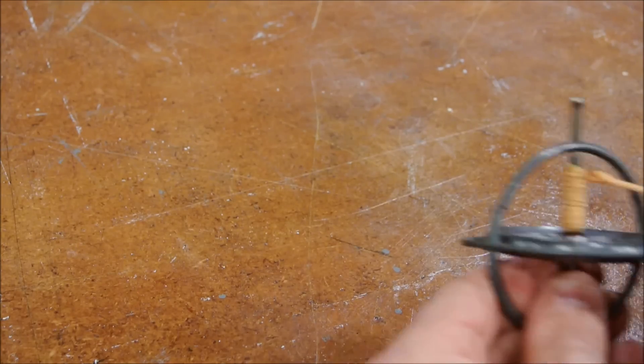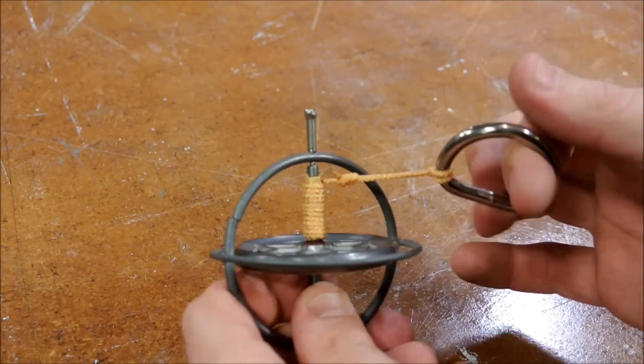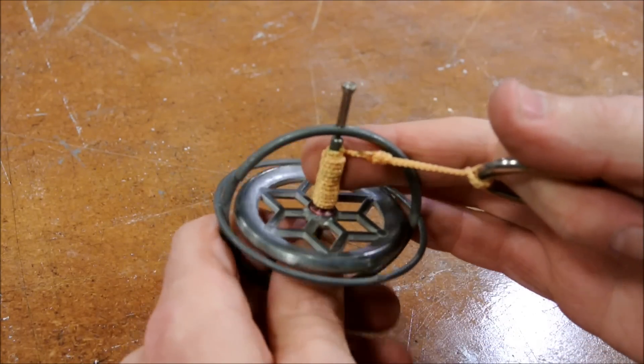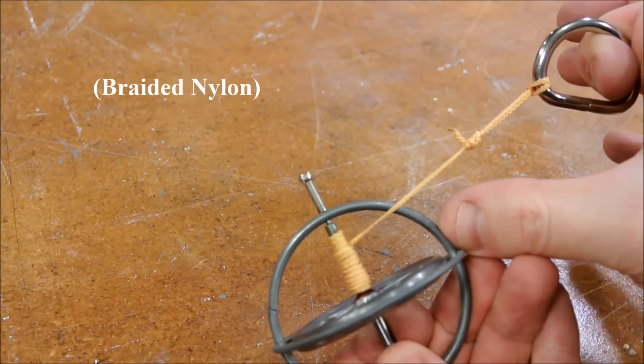This should at least be entertaining. After years of trial and error, I have discovered the best way to get a really good pull on a toy gyroscope. Get this bricklayers twine.